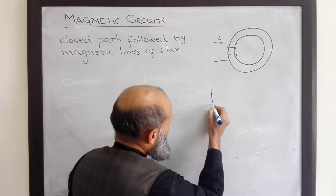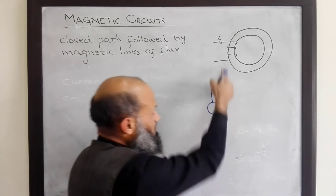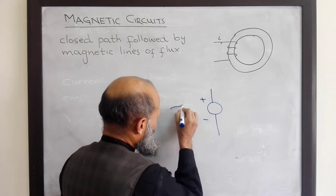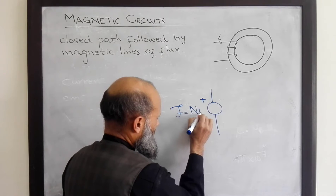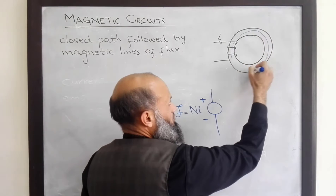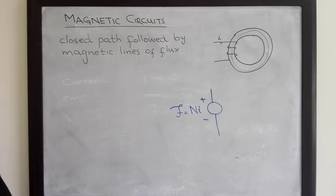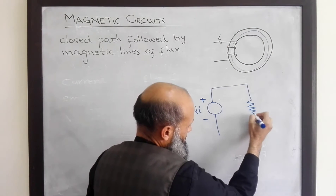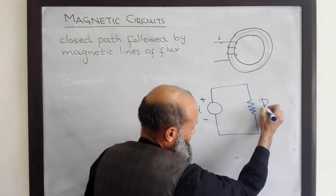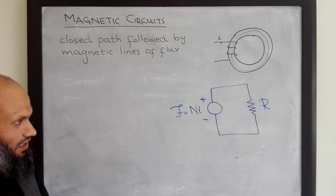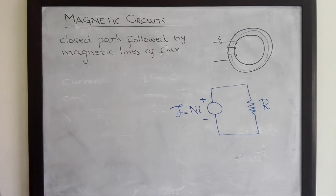In the analog electrical circuit, the source of MMF can be represented by a voltage source, where MMF equals N multiplied by I. The flux follows the closed path, and the reluctance of this closed path is represented as a resistance. Once we have the equivalent electrical circuit, we can easily analyze that particular circuit. To further elaborate this point, let's take a few examples.